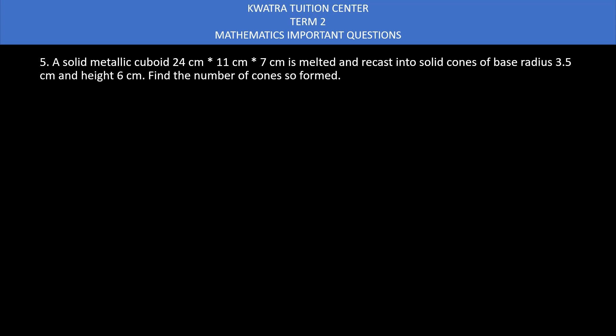Let's start with the fifth question. A solid metallic cuboid having dimensions of 24 cm, 11 cm, 7 cm is melted and recast into solid cones of base radius 3.5 cm, height is 6 cm. Find the number of cones so formed.